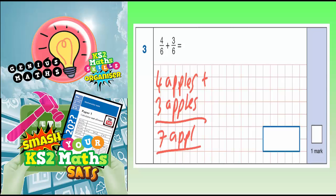So the unit would be apples, but the unit we're talking about here is sixths, because we're dealing with sixths. So 4 sixths add 3 sixths. We've got a common denominator, so we can just use that common denominator in our answer. We're dealing with sixths.